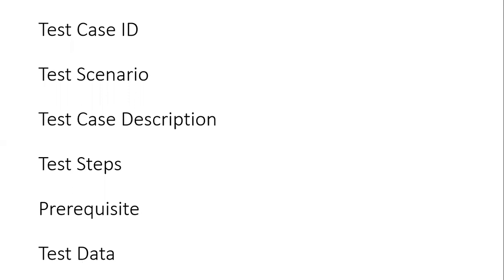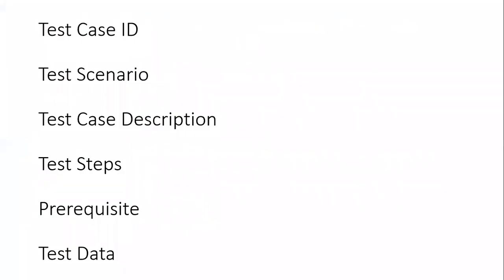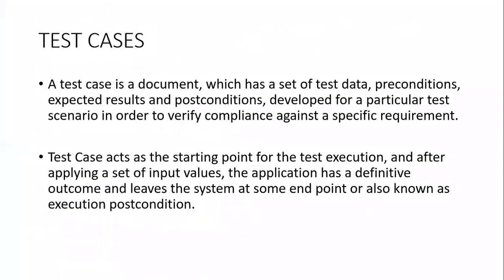Each test case should have a unique identification — that is called the test ID. The test scenario is the scenario which you need to test. Then there is a test description detailing what your test case is about. Then test steps: which steps you are going to follow to execute that particular scenario. Also, the pre-requirements of your testing, then test data, test results, test parameters, actual results, environmental information, and comments. These are the things which you need while doing testing.